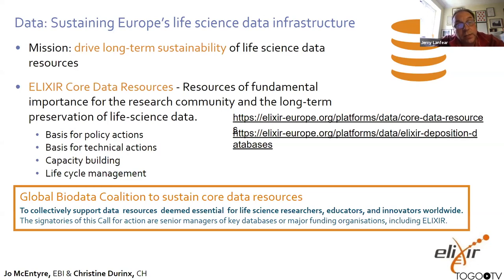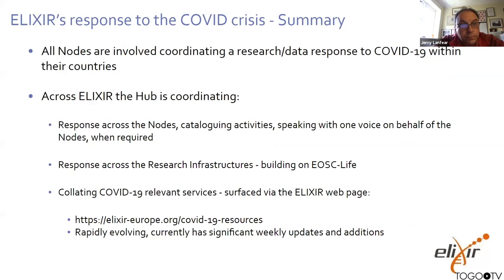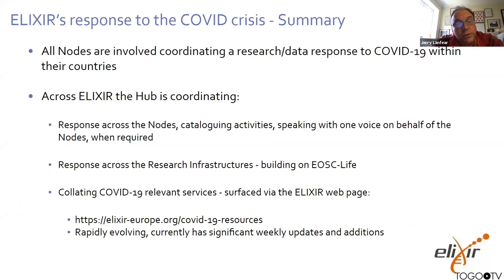So that's the quick tour of ELIXIR — what we do, how we're structured, and what we offer. Now, what about specifically COVID-19? All ELIXIR nodes, as far as we know, are involved in coordinating research or data responses within their countries to the COVID-19 crisis. At the Hub, we're starting to catalogue and capture all of the work that's ongoing.